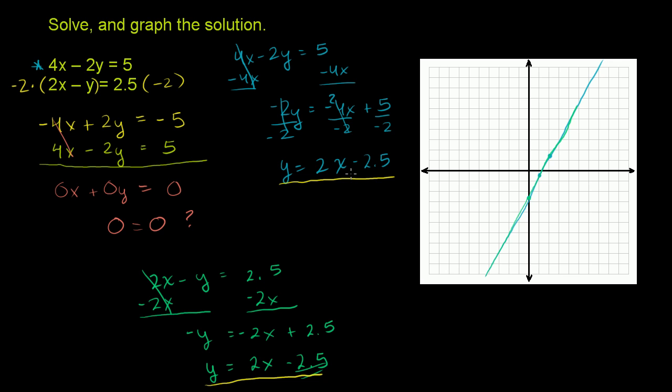That these actually have an infinite number of solutions. Any point on this line, which is both of those lines, will satisfy both of these equations. You give me an arbitrary y, solve for x in the top equation, that x and y will also satisfy the bottom equation. So this actually has an infinite number of solutions. These are the same line.